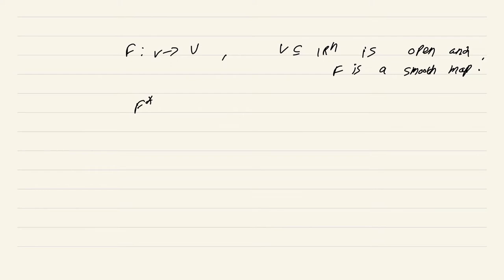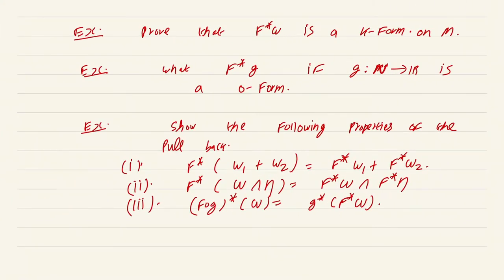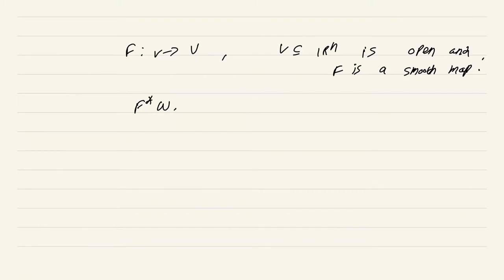Let us analyze what happens to this k-form when we take a map f from V to U, where V is an open subset of R^m, and f is a smooth map. In this scenario, let us try to see what f star omega is. We are going to repeatedly use the properties of pullbacks — so please prove those properties now before proceeding, as it is simply not possible to proceed without them.